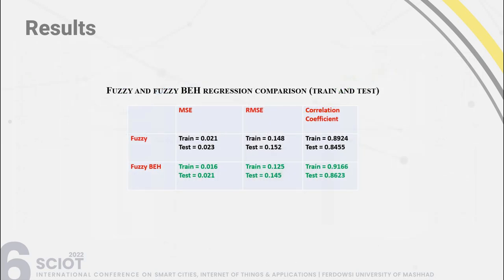The results of fuzzy and fuzzy BEHA algorithms are compared using different error metrics: MSE, RMSE, and correlation coefficient. Note that the correlation coefficient is not an error — it should go higher, the higher the better — while MSE and RMSE should be lower. In all cases, fuzzy BEHA algorithm achieves lower MSE values and higher correlation coefficient values, demonstrating the performance advantage of our algorithm.